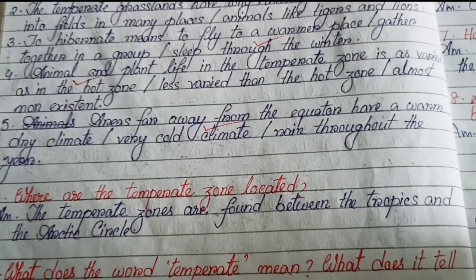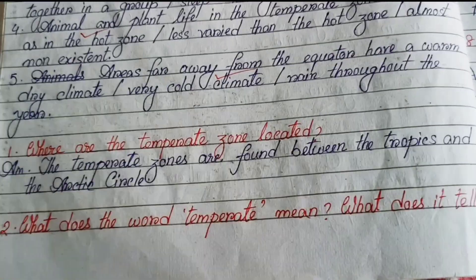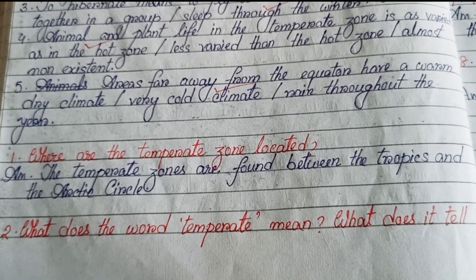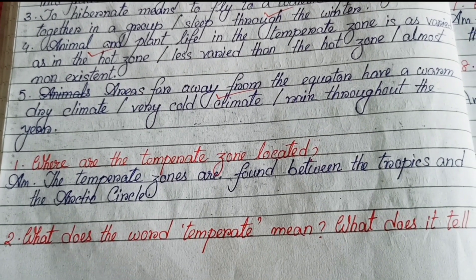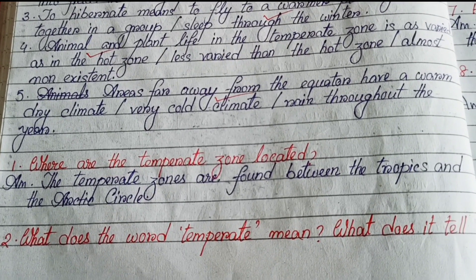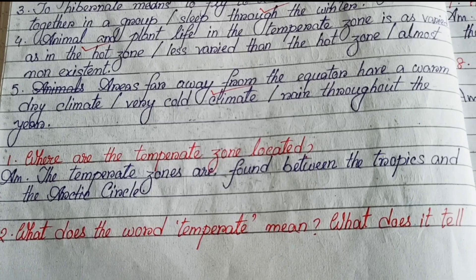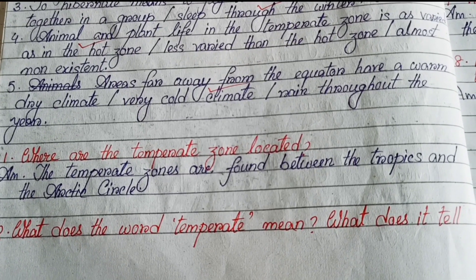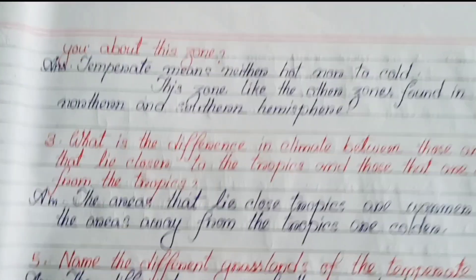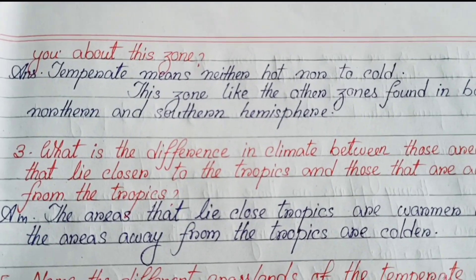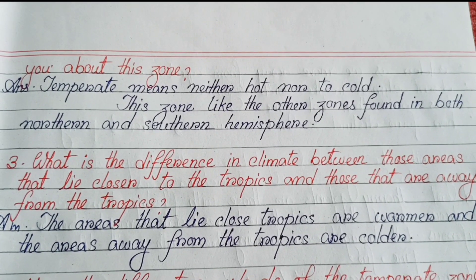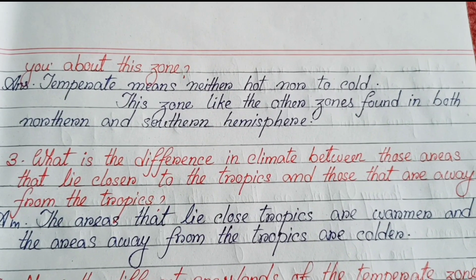Now it's time for question answers. Number one: where are the temperate zones located? The temperate zones are found between the tropics and the arctic circle. Number two: what does the word temperate mean and what does it tell you about the zone? Temperate means neither too hot nor too cold. This zone, like the other zones, is found in both the northern and southern hemispheres.